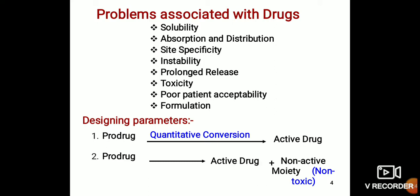Designing parameters for prodrugs include quantitative conversion — the prodrug is converted into the active form. The prodrug can convert into the active form plus a non-active moiety, where the non-active moiety is a non-toxic compound.